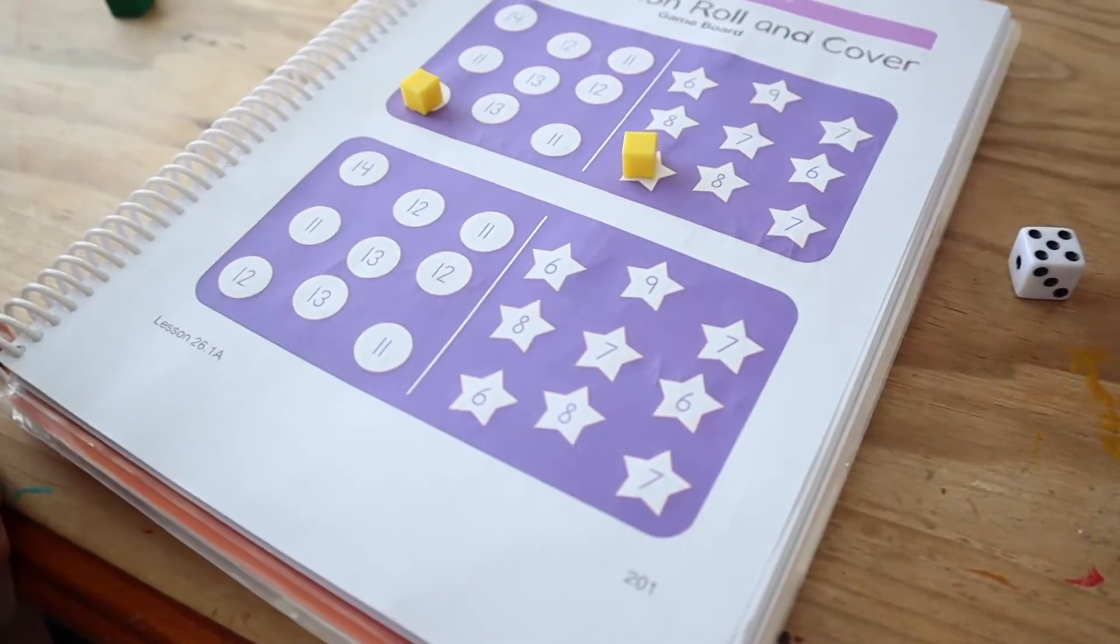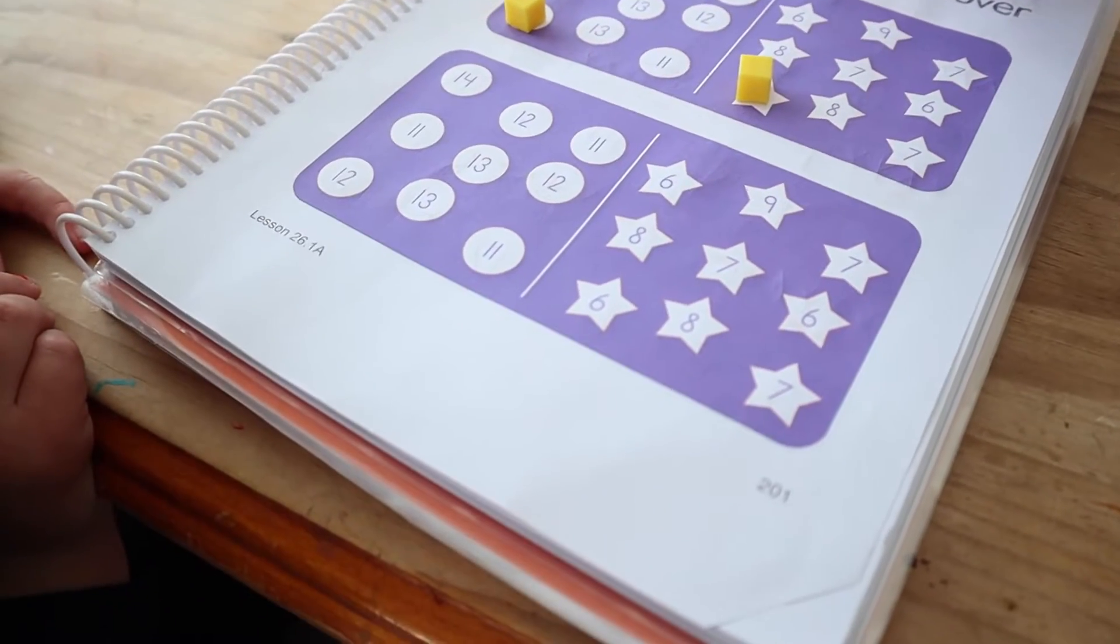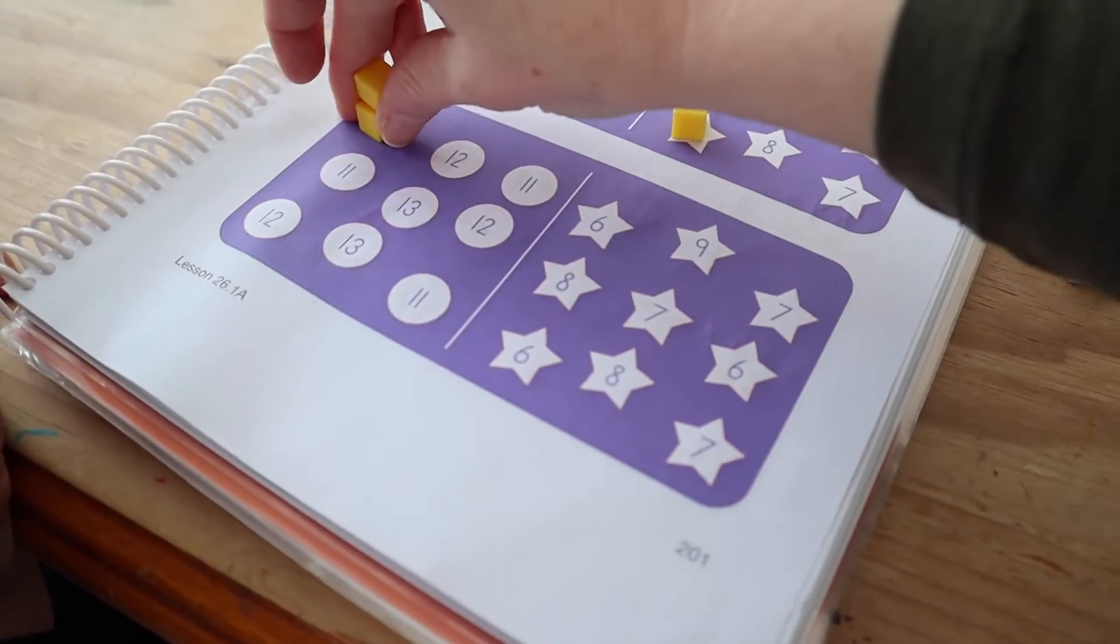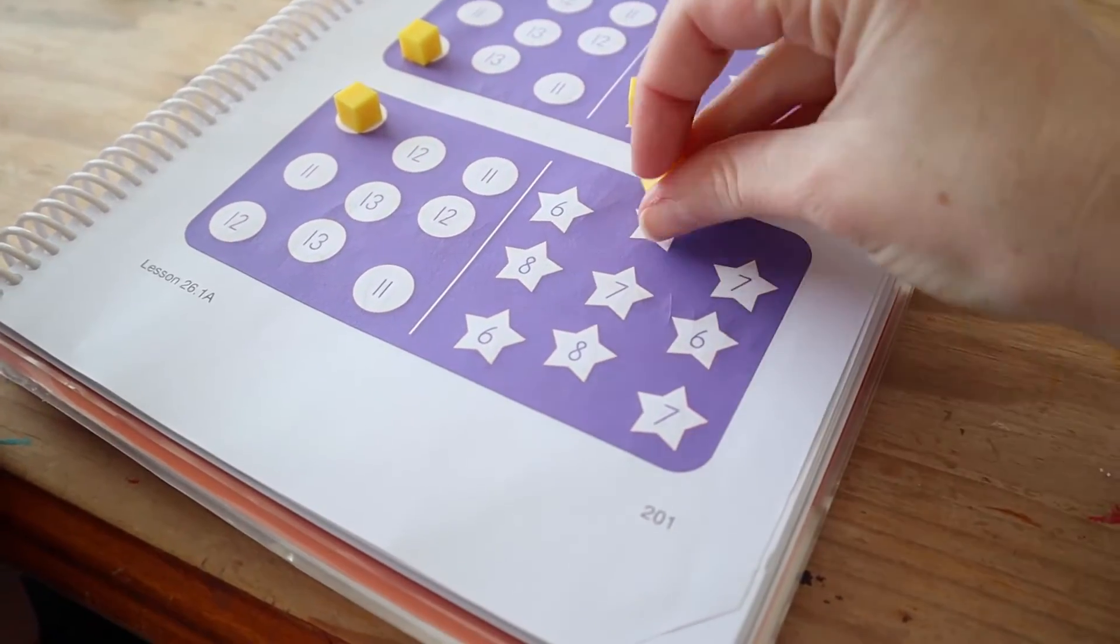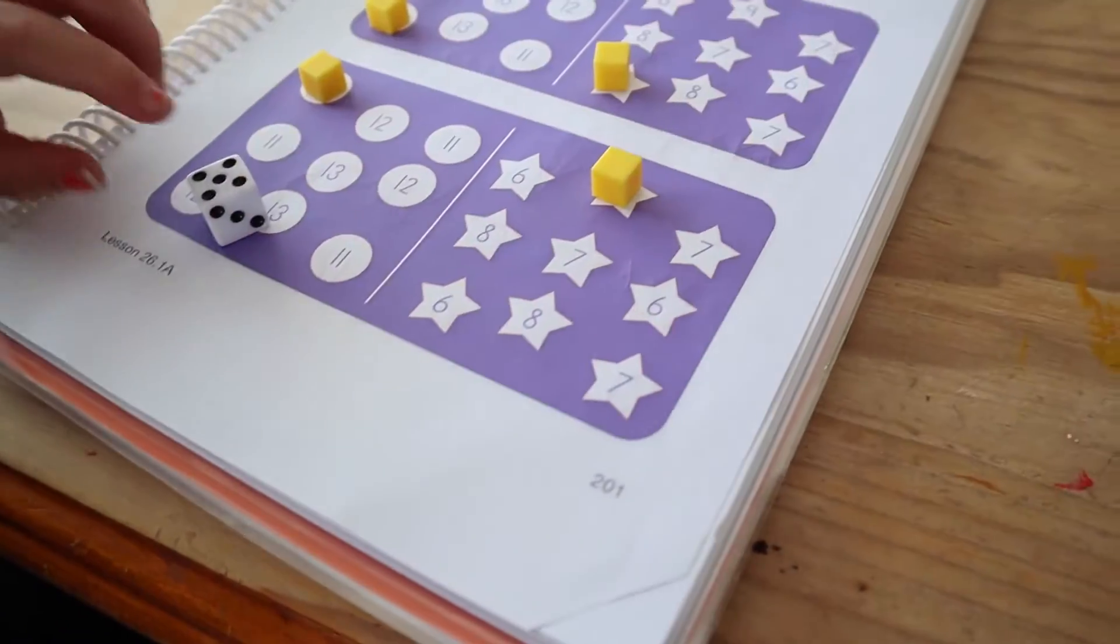I'm going to roll five. So I'm going to do, hmm, I might do 14 minus five. No, 14. Yeah. 14 minus five equals nine. I'll do that one. All right, your turn.